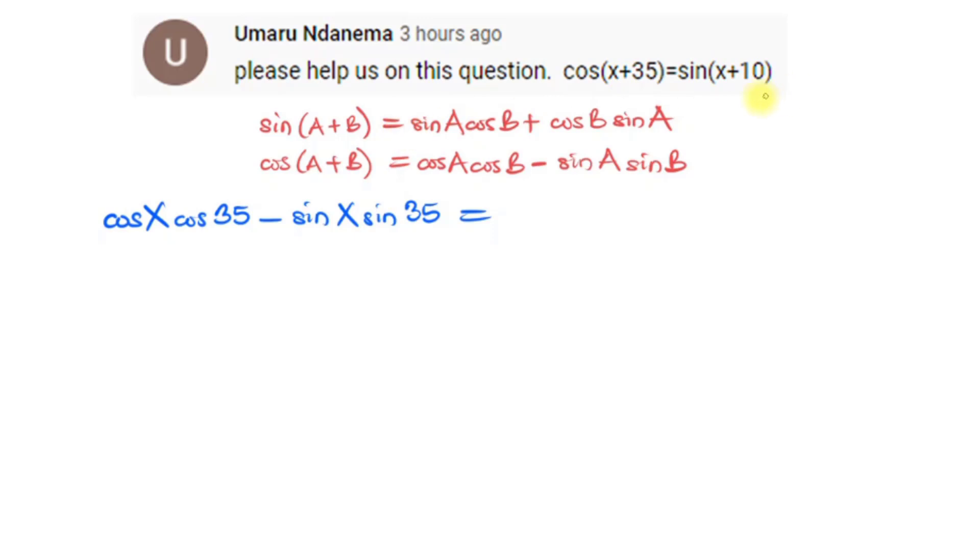On the right hand side it is sin, so we have sin(x+10). Making use of this sin(A+B) formula, we can say it is sin(x)cos(10) plus cos(x)sin(10).